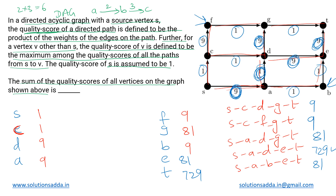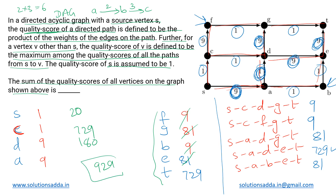Now we sum all the quality scores: s=1, c=1, d=9, a=9, f=9, g=81, b=9, e=81, t=729. Summing these gives 1+1+9+9+9+81+9+81+729 = 929. So the final answer for this question is 929.